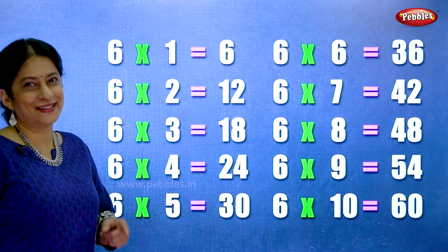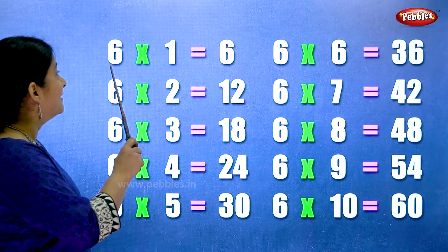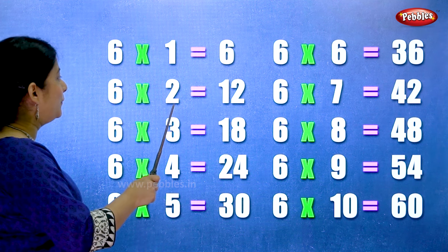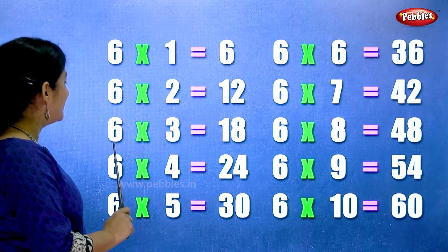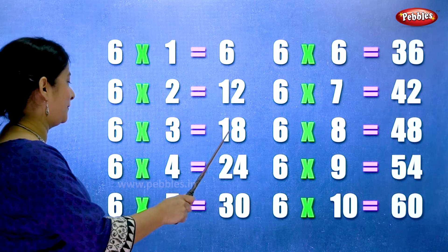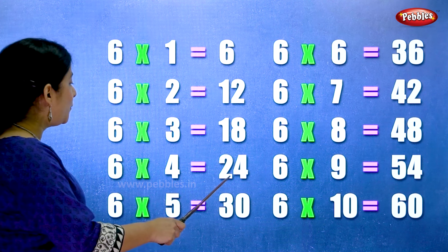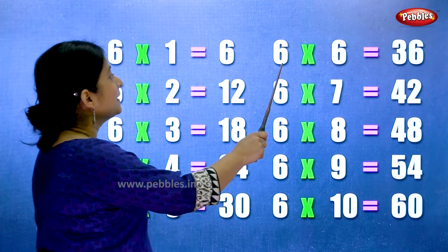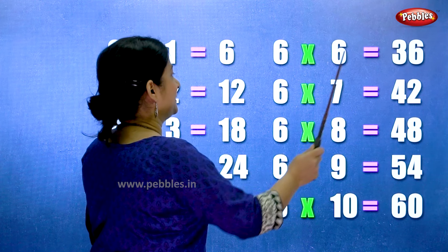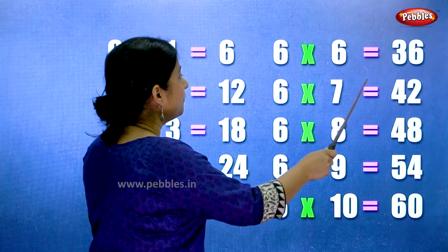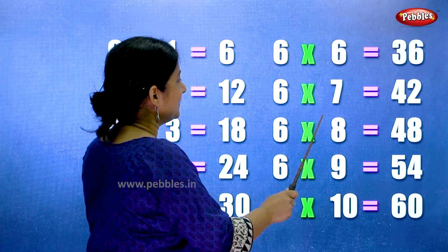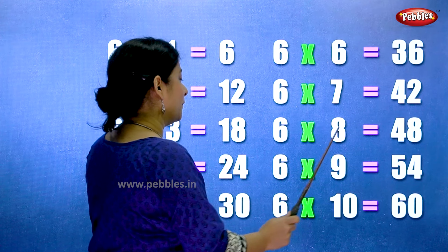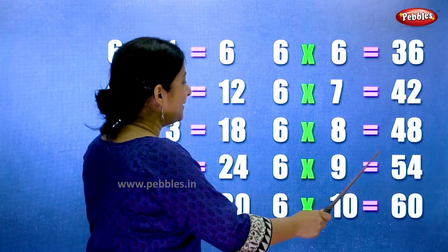Let's learn the table of six one more time. Six ones are six. Six twos are twelve. Six threes are eighteen. Six fours are twenty-four. Six fives are thirty. Six sixes are thirty-six. Six sevens are forty-two. Six eights are forty-eight. Six nines are fifty-four. Six tens are sixty.